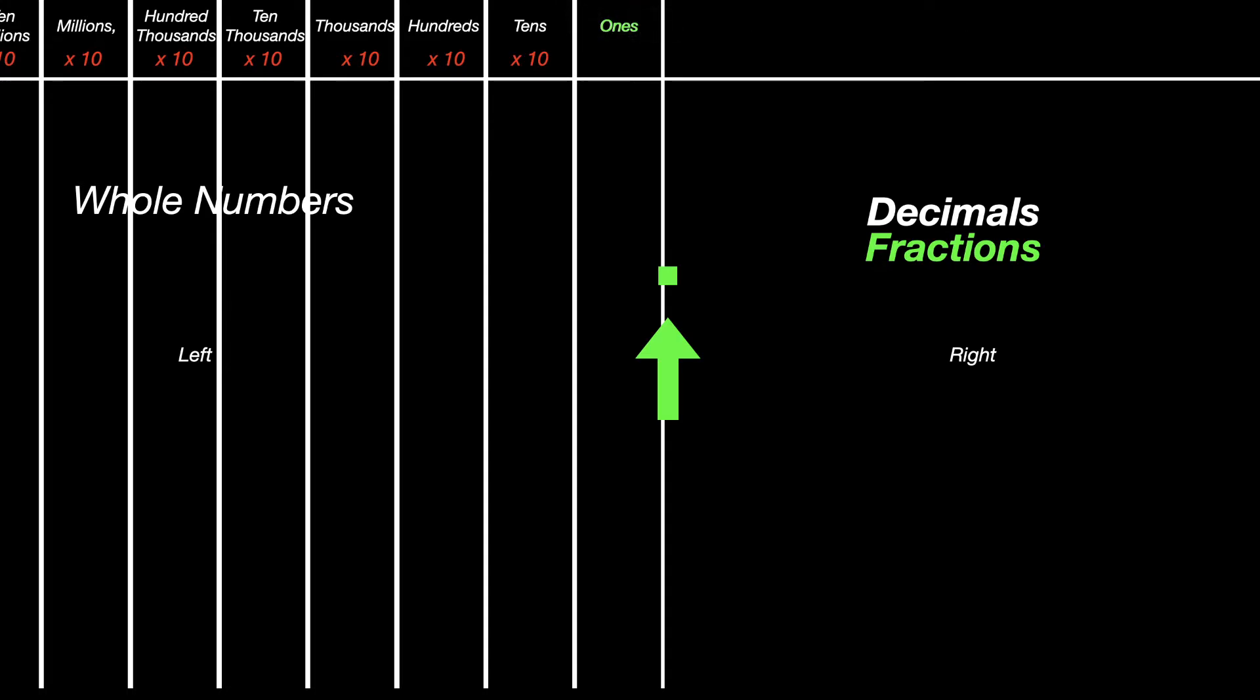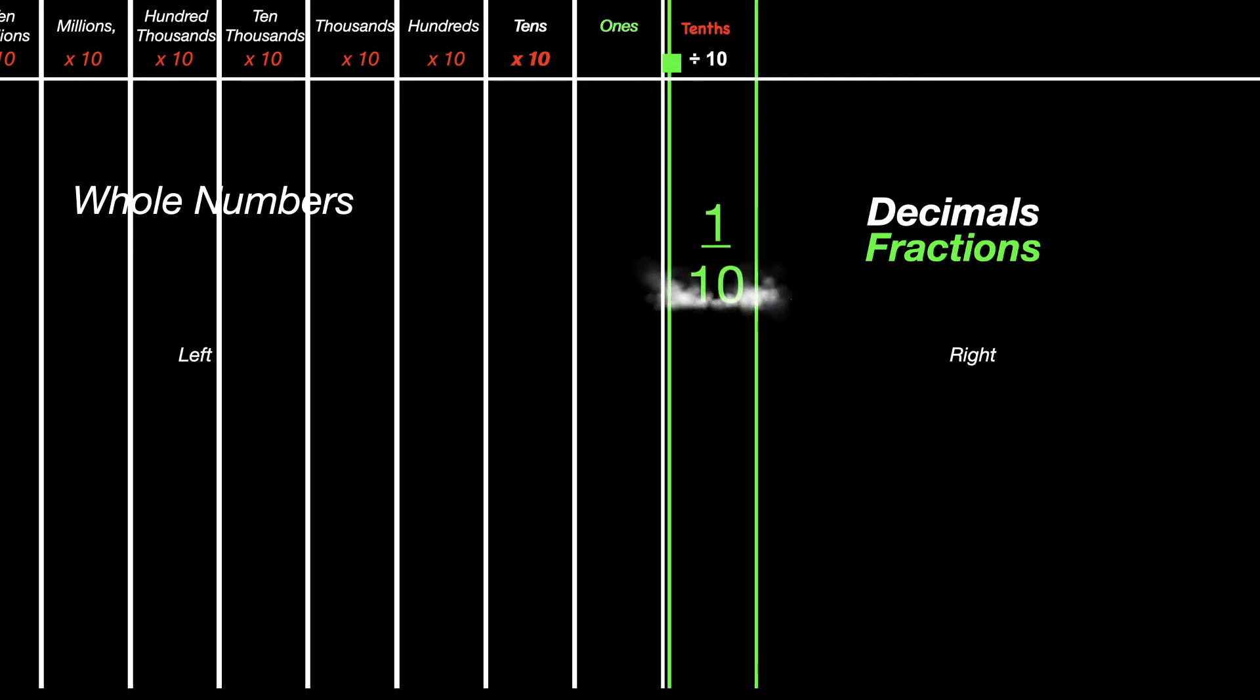We started with ones when we first learned how to count, and we increased through the tens and through all the whole numbers. In a similar way, instead of going up by 10, the other way would be fractions. We would start with tenths, and instead of multiplying by 10, we divide by 10. For example, the one divided by 10, zero decimal point one would read as one-tenth. We have our decimal point, and on the right side of that decimal point, we have a new place value called the tenths, and that is showing fractions.